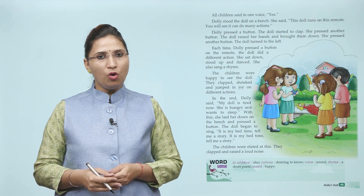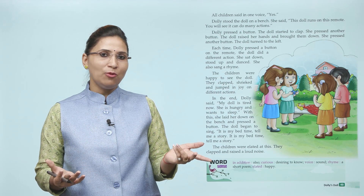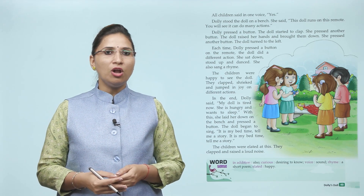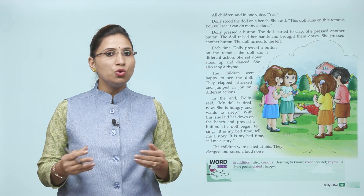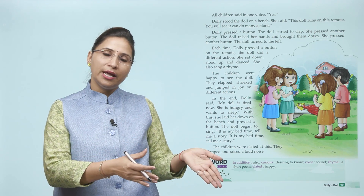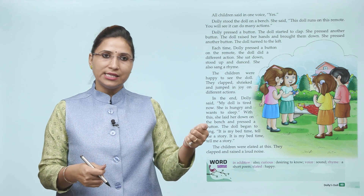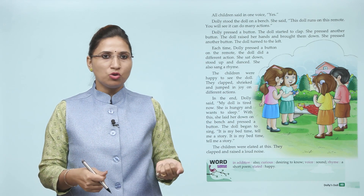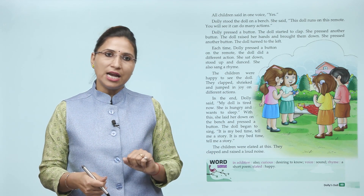All children said in one voice: Yes! Dolly boli ki main tumhe dikha sakti hoon kis kis tarah ke action karti hai. Toh sab bachy bole yes. Dolly stood the doll on a bench. She said: The doll runs on this remote — you will see it can do many actions. Dolly vahan khadi ho jati hai apni doll ke saath, aur doll ko bench par khada kar deti hai. Aur bolti hai ye jo doll hai wo runs karti hai is remote ke saath. Jaise jaise main remote ko move karungi aur usko command dungi, vaise hi wo apne action start karegi.